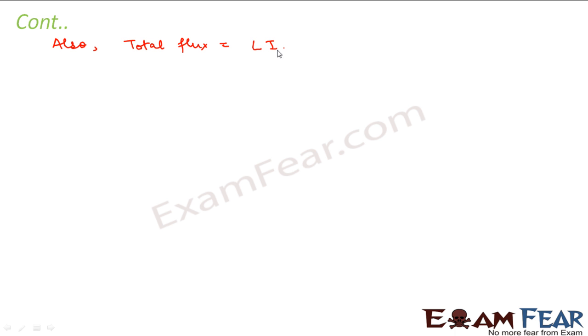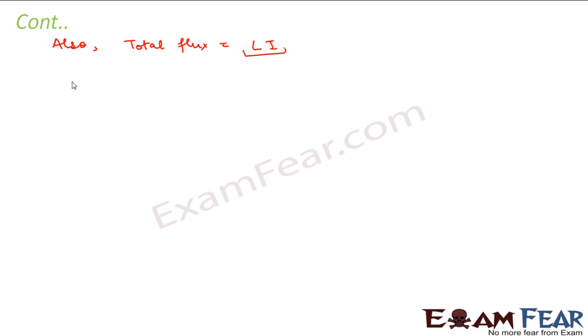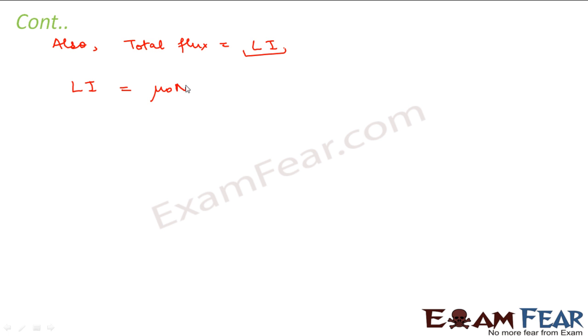We also know that the total flux or flux linkage is equal to L times I, because the total flux is directly proportional to the current flowing — that constant of proportionality is self-inductance. So from this we can say that LI equals the total flux we obtained. Equating both sides: LI = μ₀N₁²I × A₁ divided by 2πr₁. The I's cancel out.